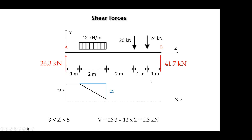Jumping to the third interval where Z is between 3 and 5 — this includes the whole UDL in the calculation. At any cross-section in this interval, I have 26.3 positive from the reaction minus the whole UDL, which is 12 multiplied by 2, giving a shear force equal to 2.3 kN. I connect 26.3 at point 1 with 2.3 at point 3 to express the linear variation of shear force produced by the UDL in the second interval.